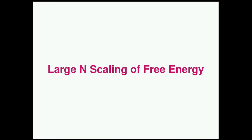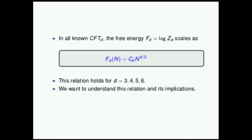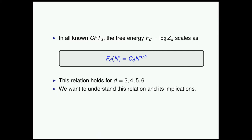Let me start with the first topic: large-N scaling of the free energy. If you tabulate all known superconformal field theories and their free energy scaling behavior with respect to large N, you will notice they have a regularity: they scale with a non-universal dimension-dependent order-one constant times N to the D over 2. For D equals 3, 4, 5, 6 — all the cases we know — they fall into this category. It's a very simple form, and this clearly cries out for an explanation.